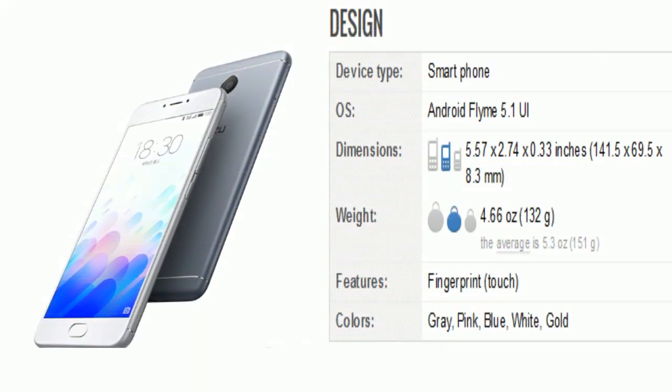This smartphone comes with OS Android Flyme 5.1. Dimensions 5.57 by 2.7, 7.74 by 0.33 inches. Weight 132 grams. The phone comes in gray, pink, blue, white, and gold color.